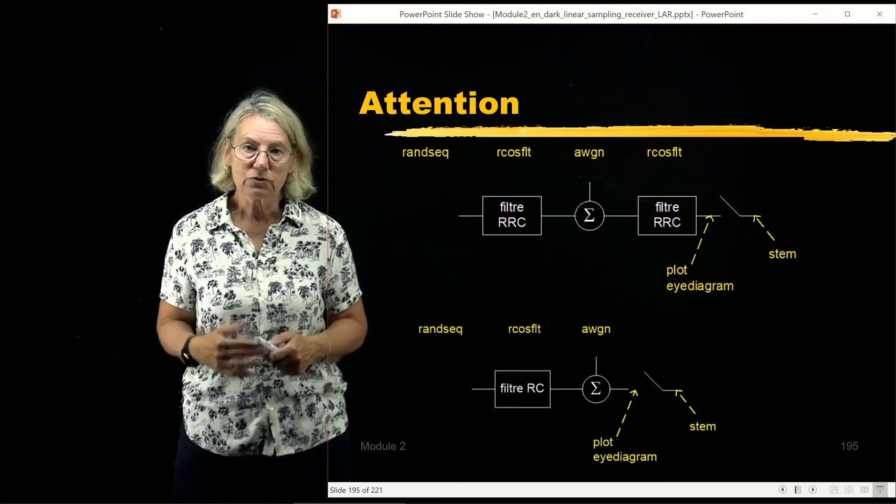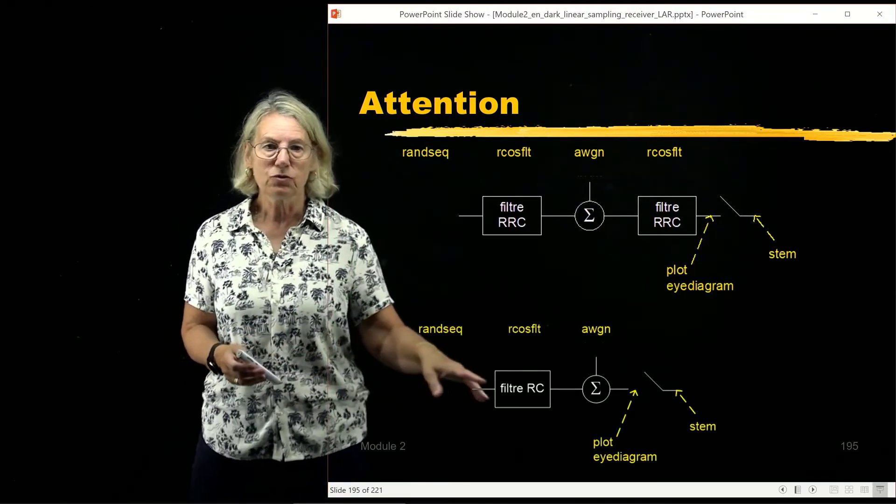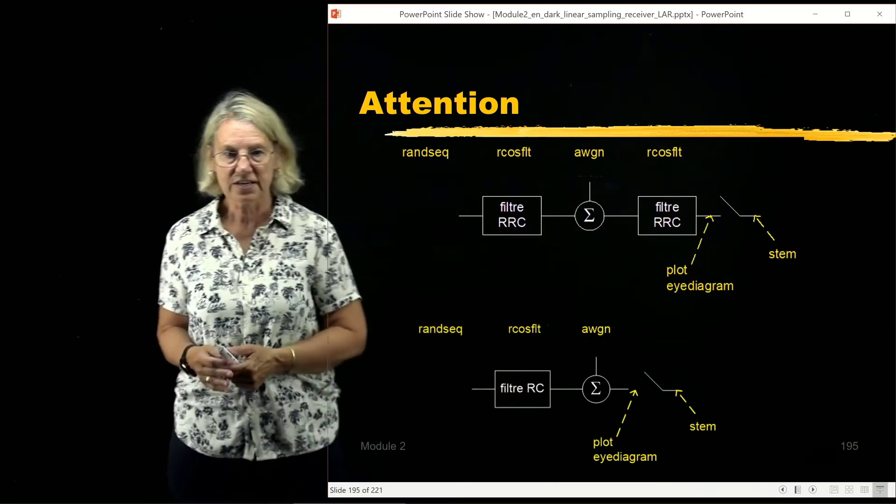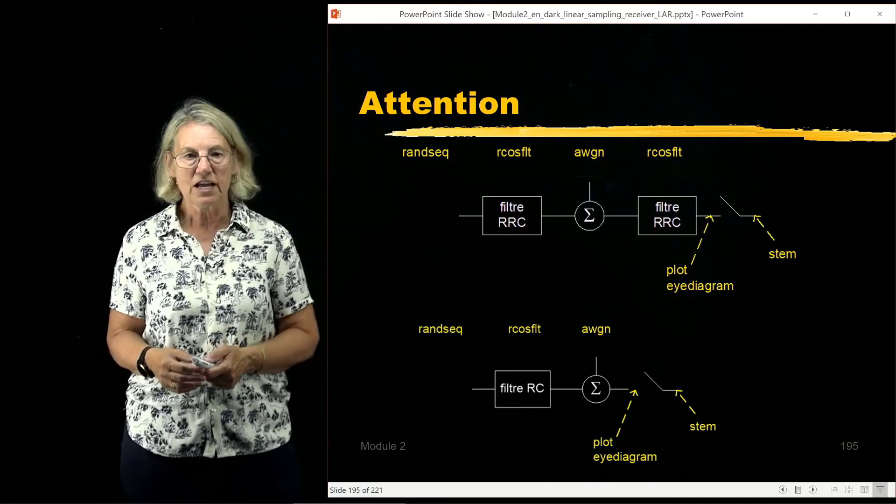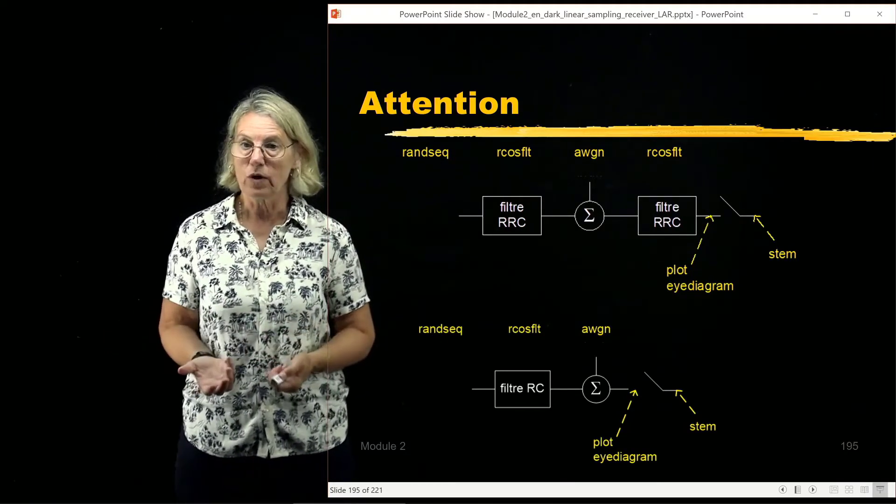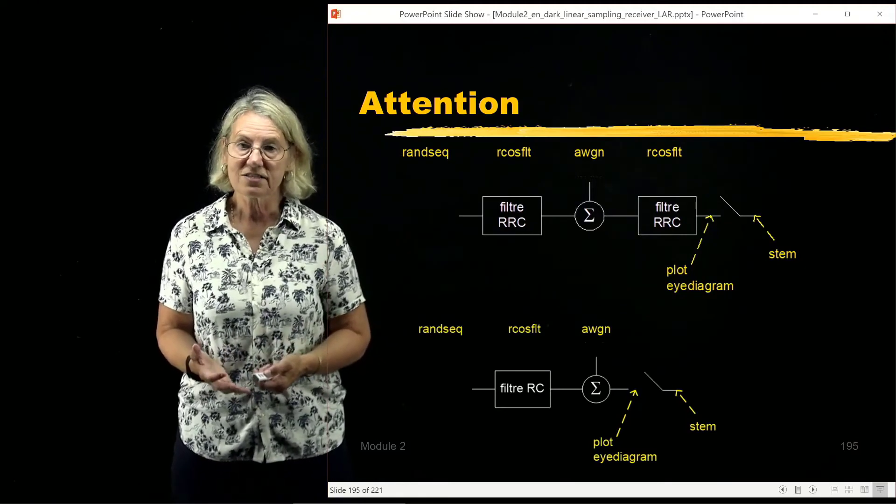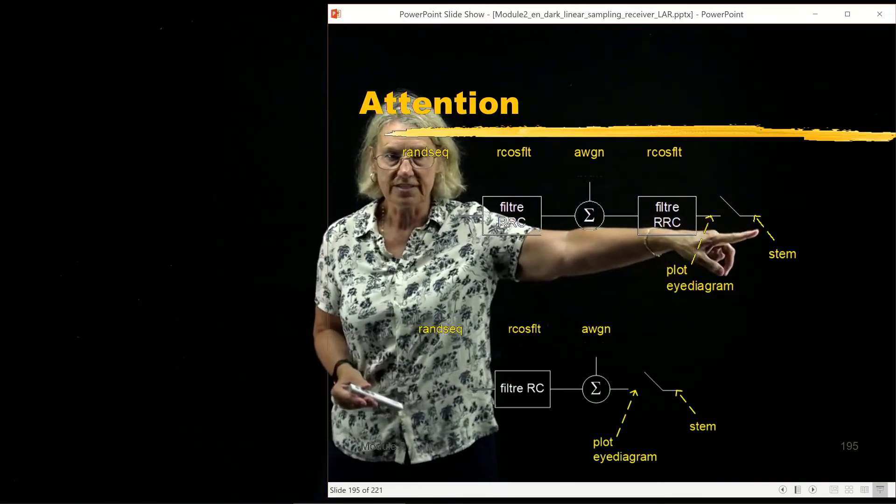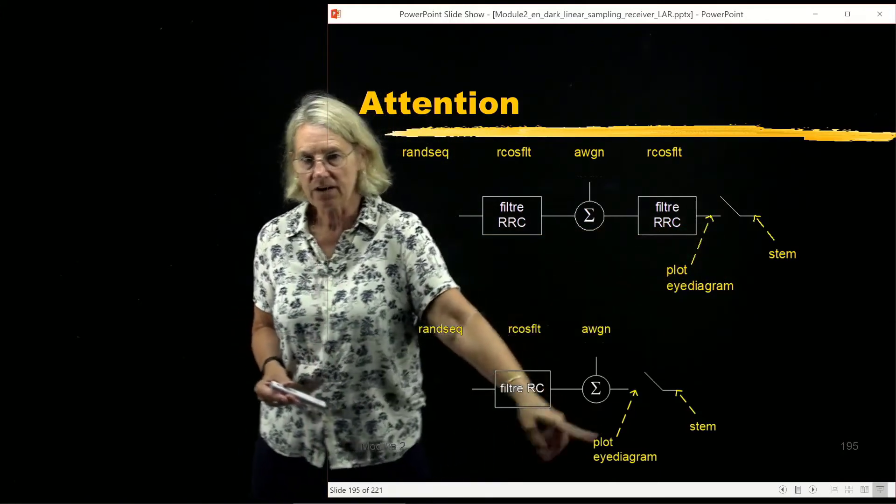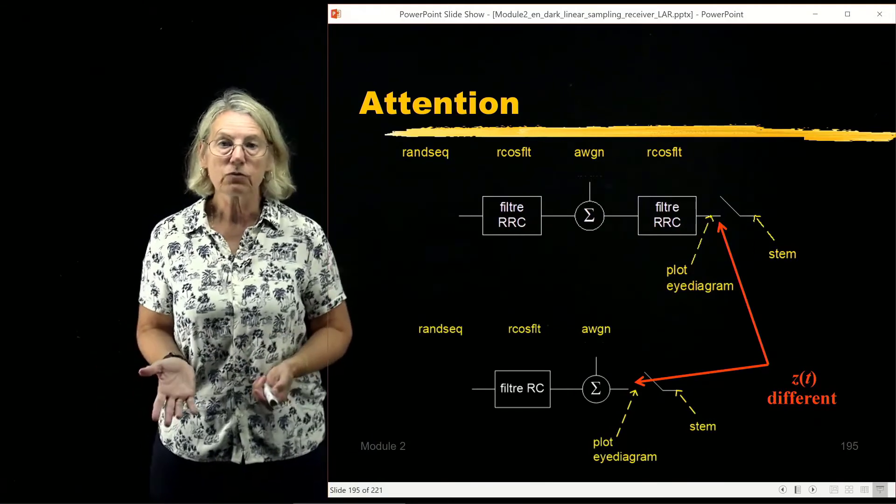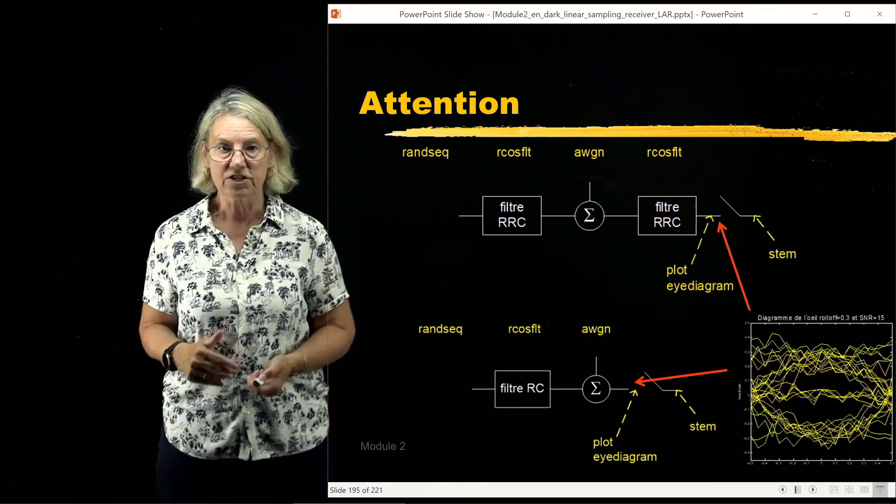Now, if you are trying to do the equivalent, and you added your additive white Gaussian noise after combining these two into a single root raised cosine filter, you would not get the correct effect of noise. And the easiest way to see that is to use an eye diagram. For instance, instead of doing a sample in a stem plot, you can do a plot eye diagram on the output there, and they'll give you different results in these two different simulations.